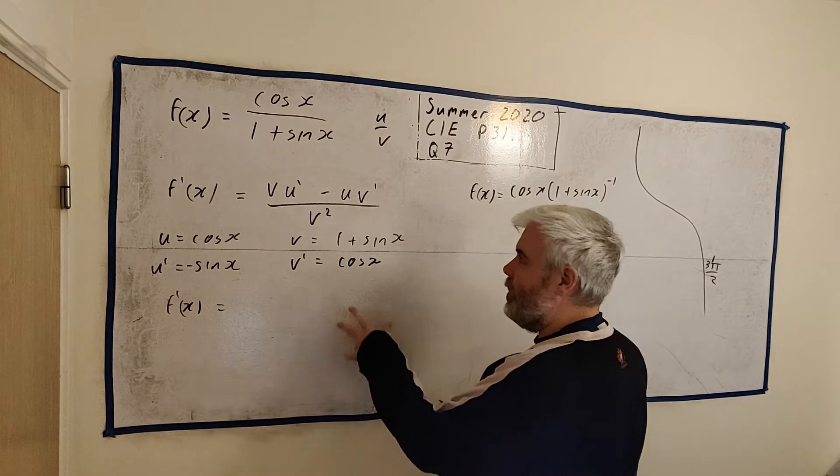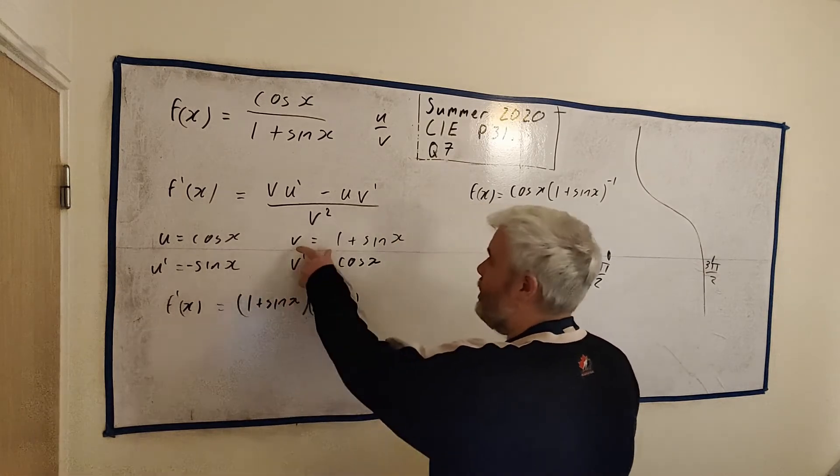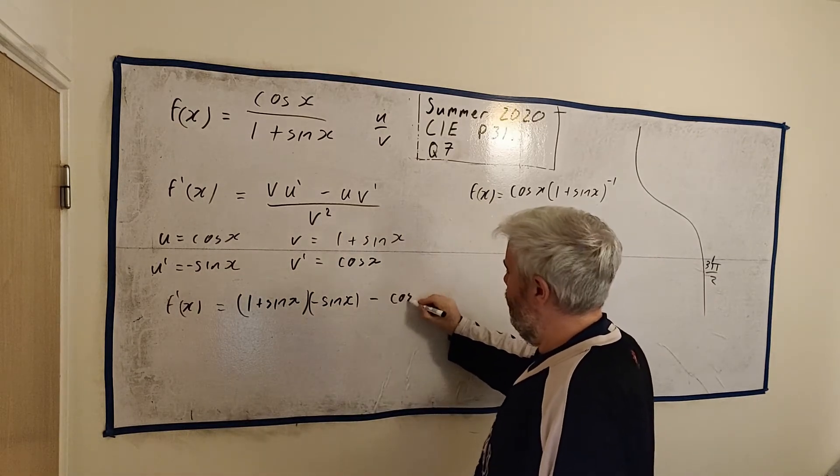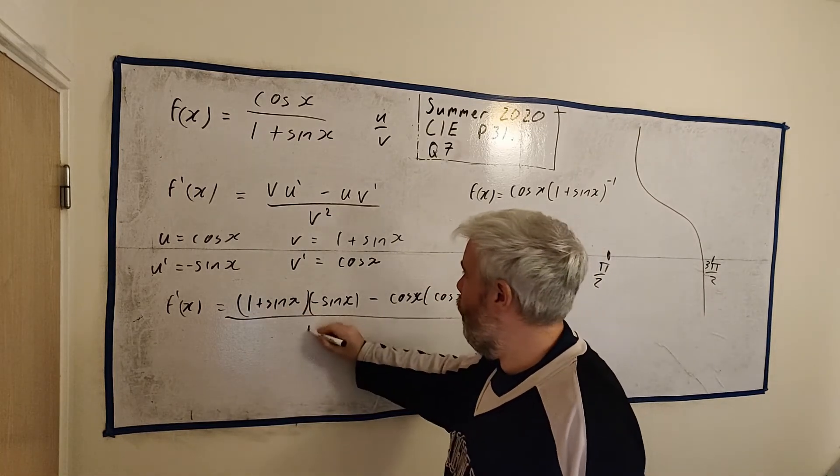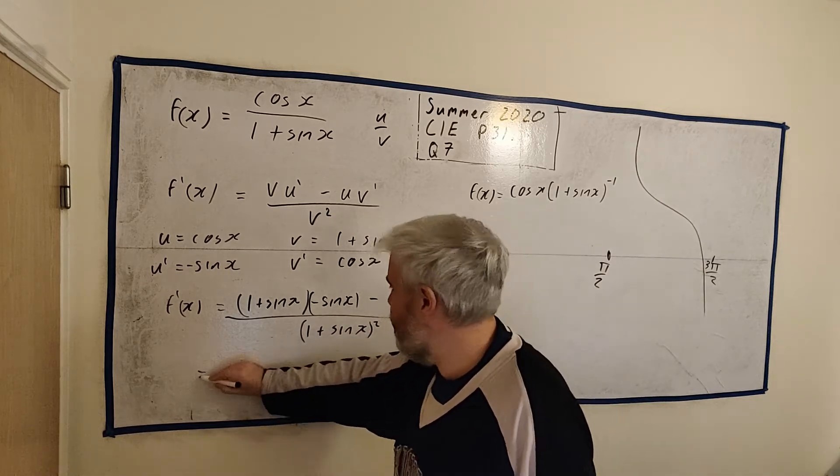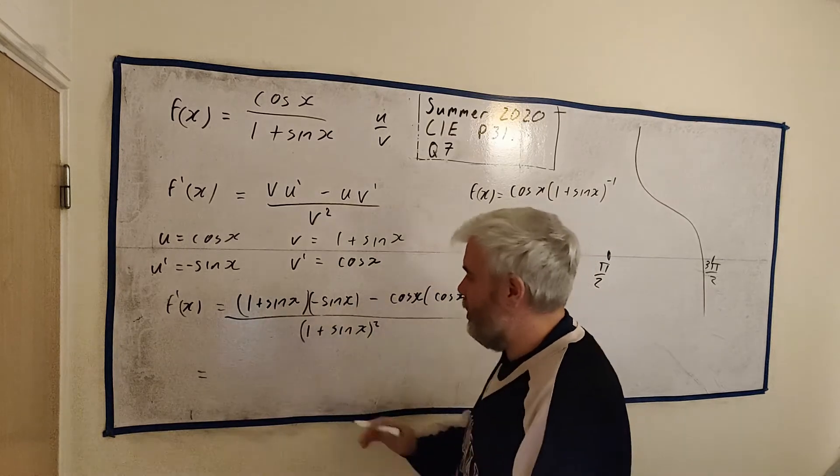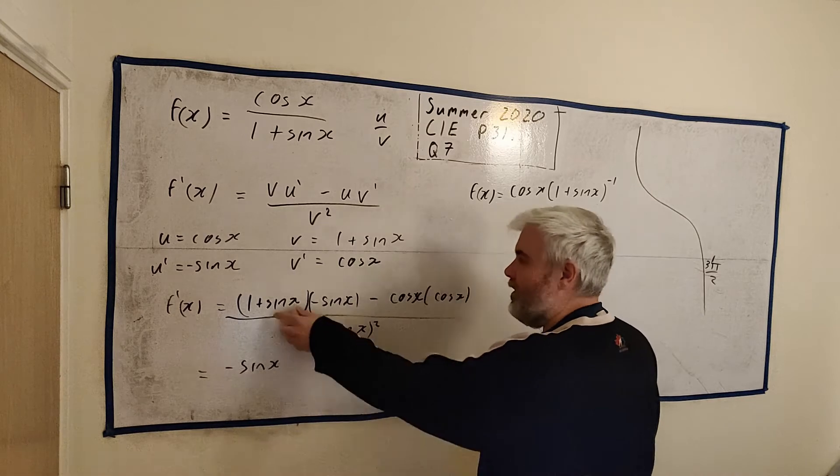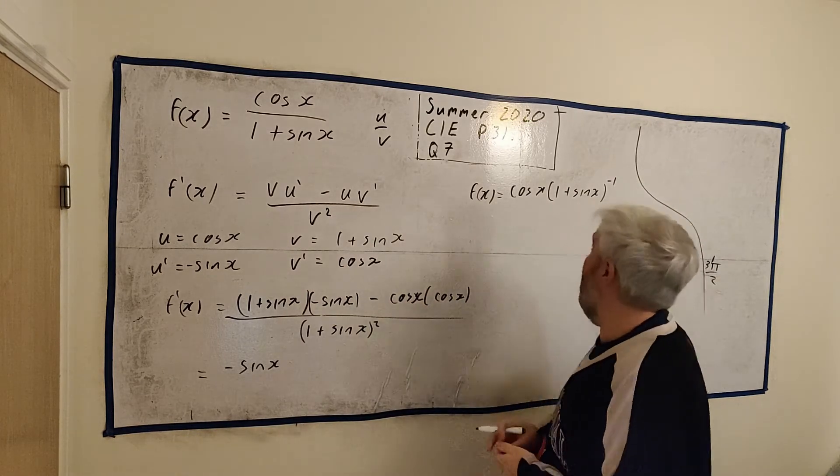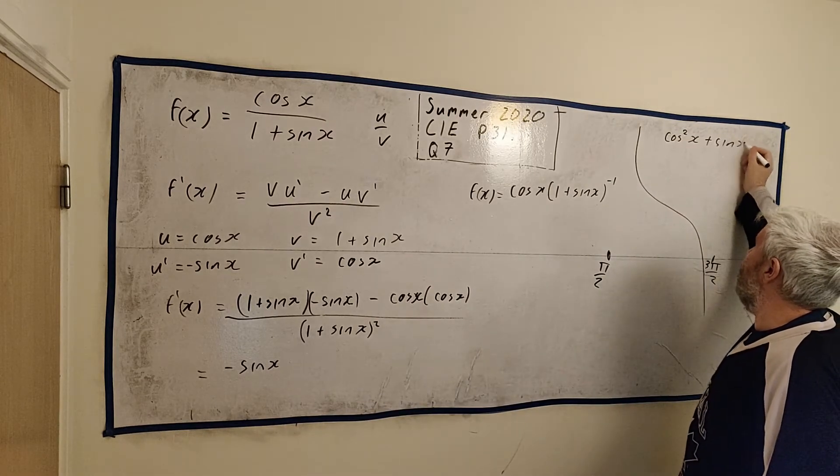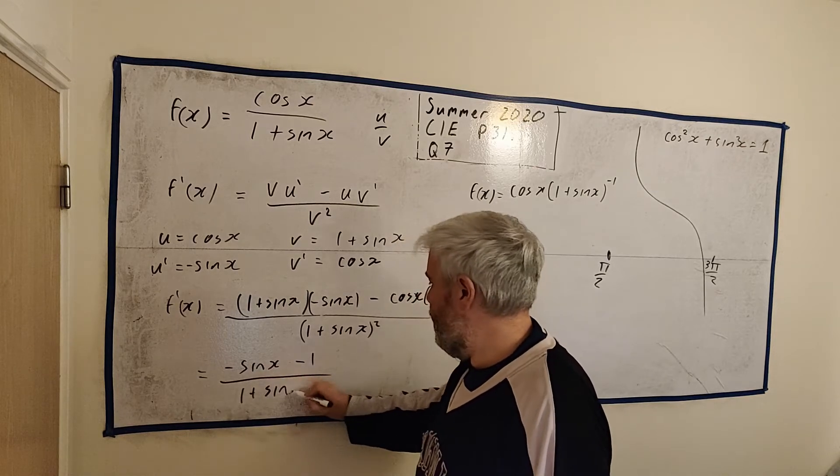So we just need to go ahead and put all this into the formula. The derivative of f(x) is equal to (1 + sin(x)) times -sin(x), that's v times u prime, take away u, which is cos(x), multiplied by v prime, which is cos(x) as well. And all of that is over (1 + sin(x))^2. We can clean this up a little bit.